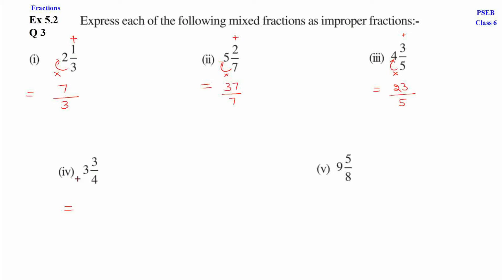Fourth part. 3 and 3 upon 4. 4 into 3 multiply. Add 3. 4 into 3 is 12 plus 3 is 15. So, numerator is 15. Upon denominator is same. So, this is 15 upon 4.